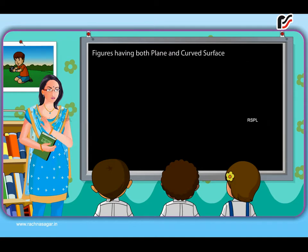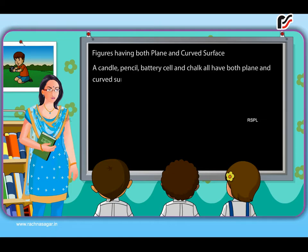Figures having both plain and curved surface. A candle, pencil, battery cell and chalk all have both plain and curved surfaces.